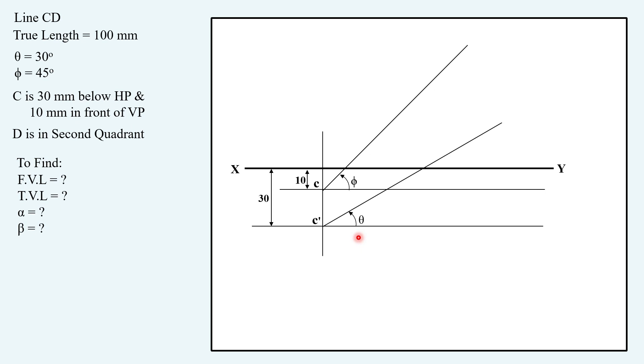Now taking 100 mm in your compass, keeping on C prime here, drawing an arc. Similarly, keeping compass on C with 100 mm as radius, drawing another arc. Creating the locus, locus of D in front view with corresponding name D1 dash, locus of D in top view with corresponding name D1.